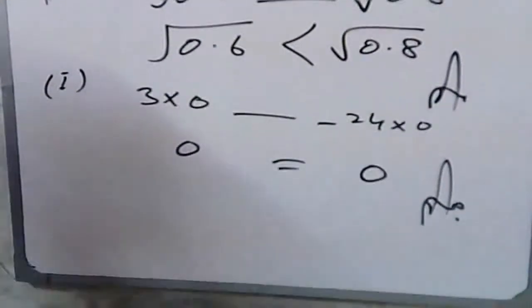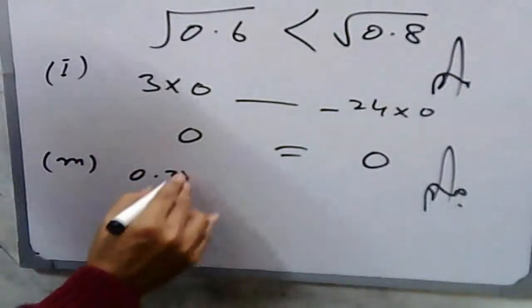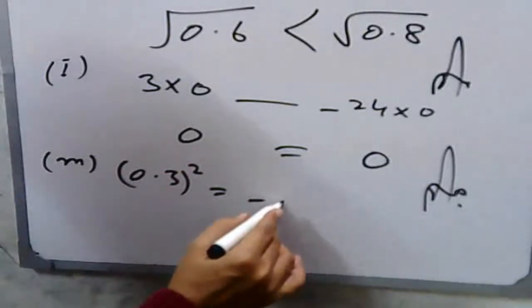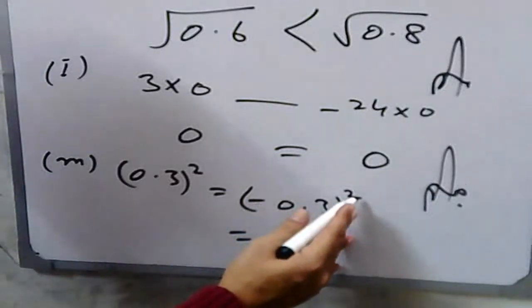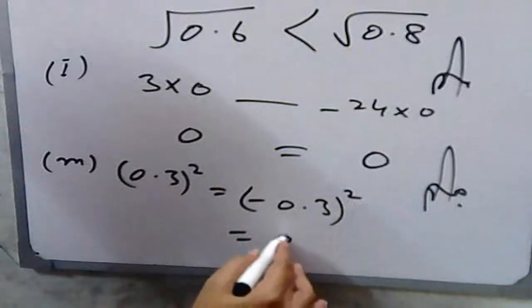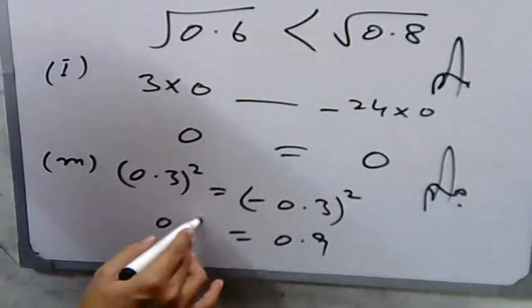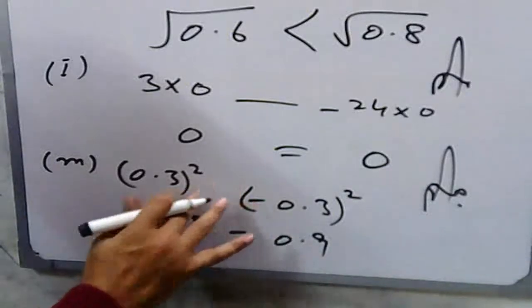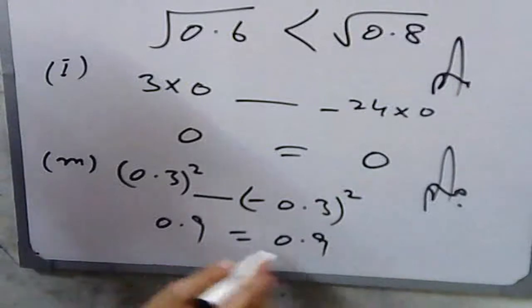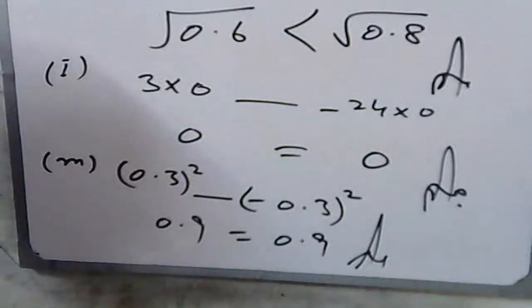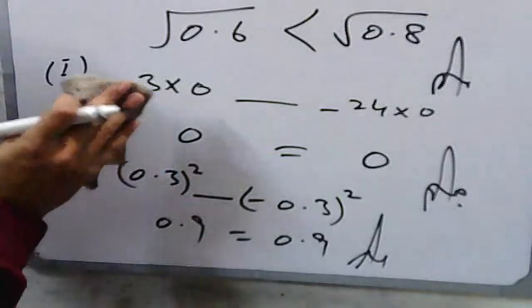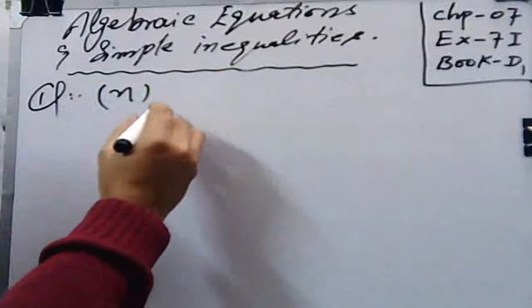In part m: (−0.3)² dash (0.3)². Since the exponent is even, the negative sign is removed from the left side. Both give 0.9, so both are equal — put the equality sign.